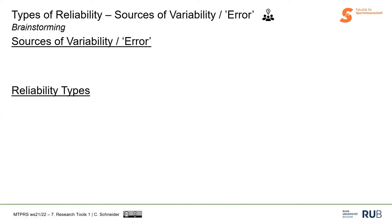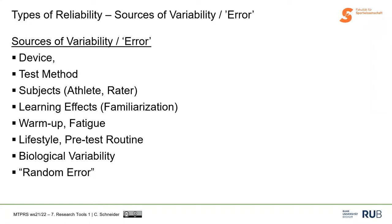A quick brainstorm: what sources of variability or error do you know? Why could a measure be less reliable? I made a brief list of possible sources. For example, different devices — if we have two heart rate measuring devices, even of the same brand, who tells us they don't measure differently?